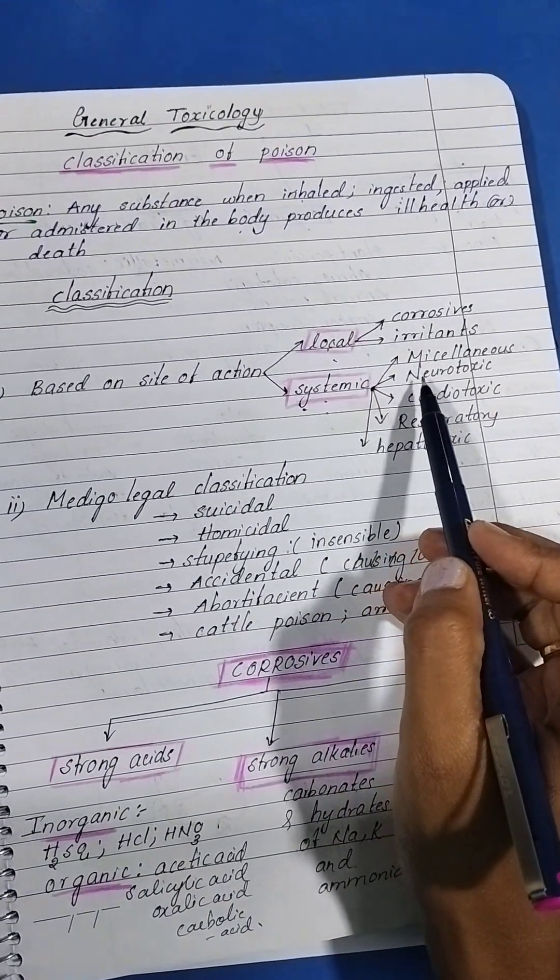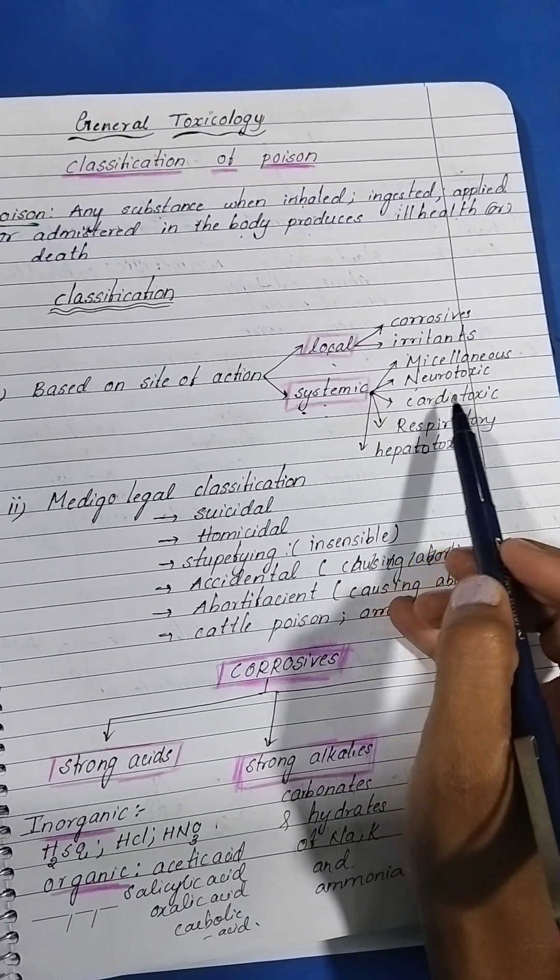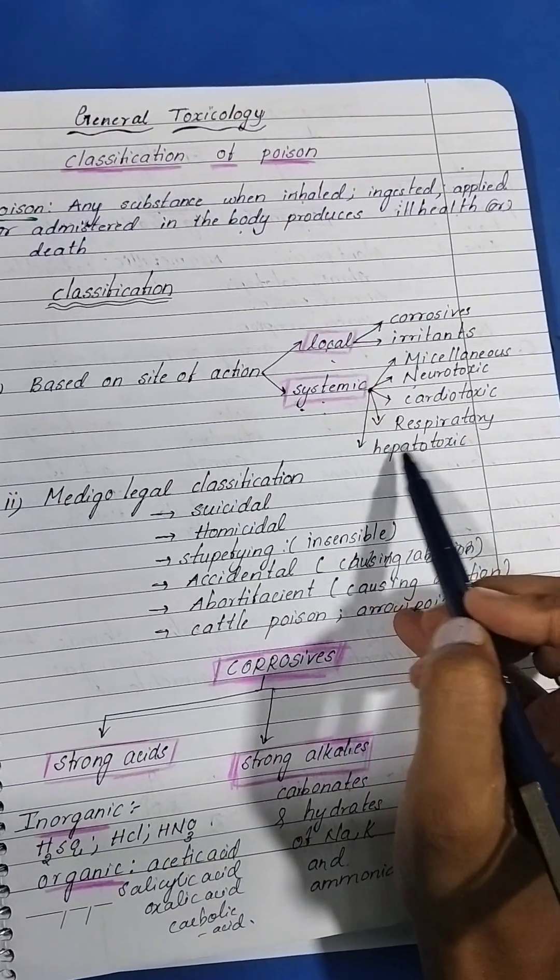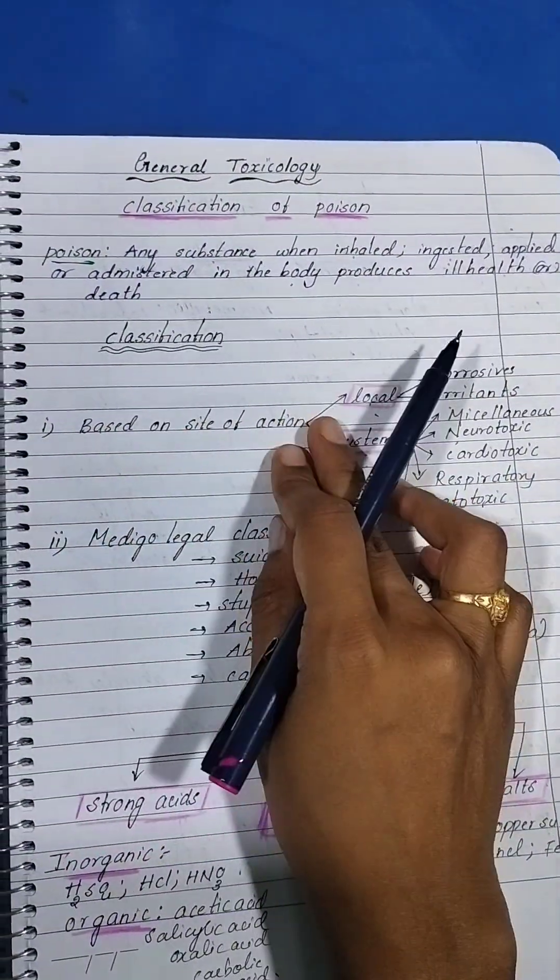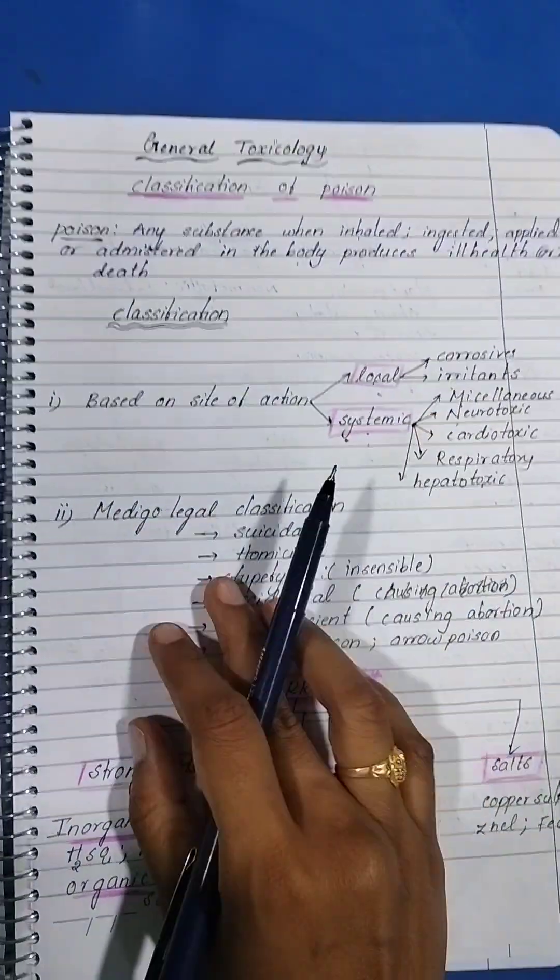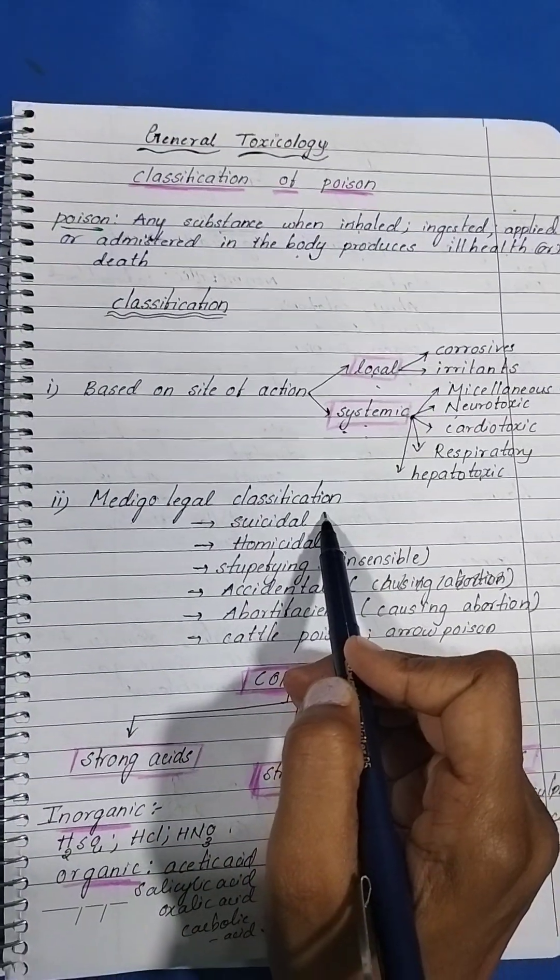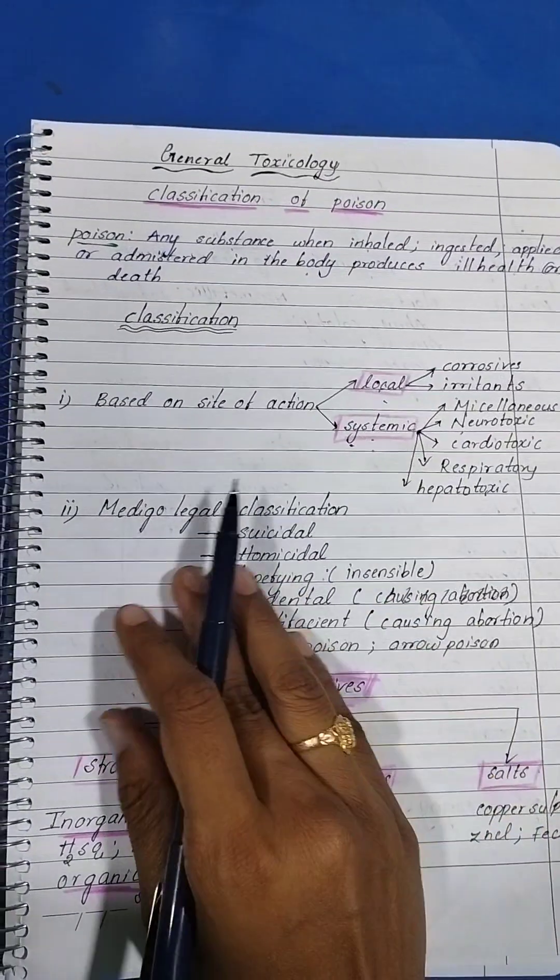If they act on the CNS they're known as neurotoxic. If they act on CVS, cardiotoxic. Respiratory, hepatotoxic, and miscellaneous. This is classification based on the site of action. Next is medical-legal classification.